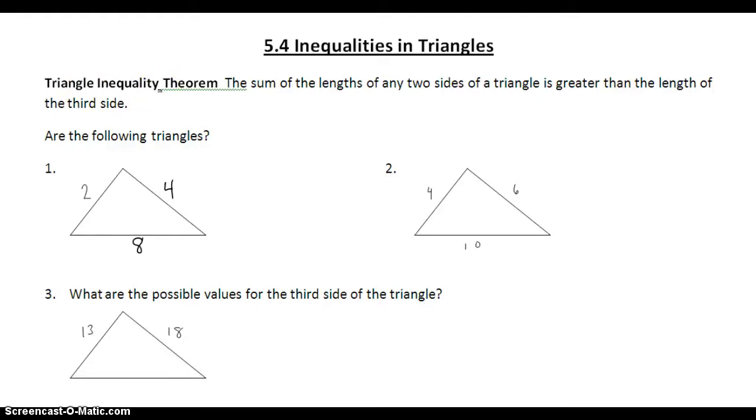The triangle inequality theorem says that the sum of any two lengths of a triangle has to be greater than the third side. The triangle inequality theorem gives us a way to decide if we have a triangle or not.